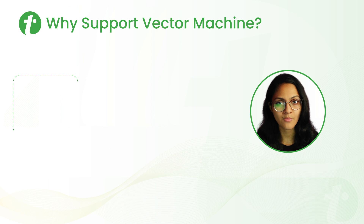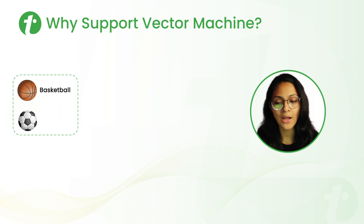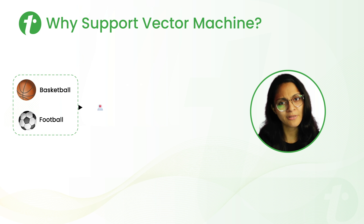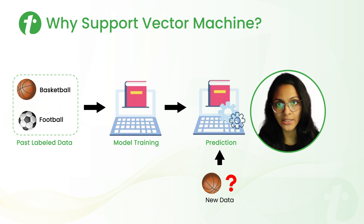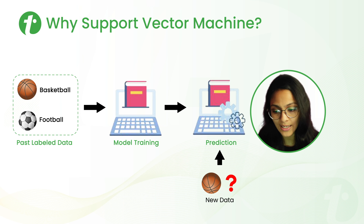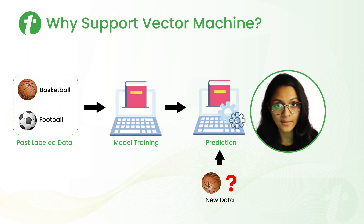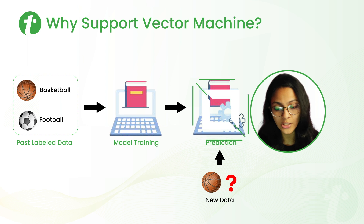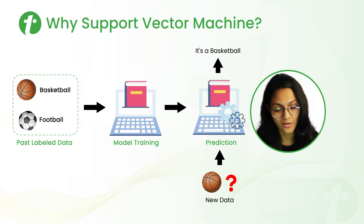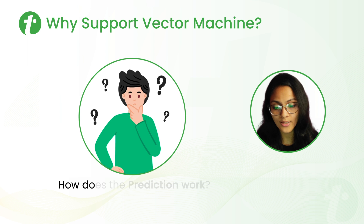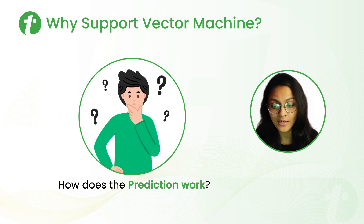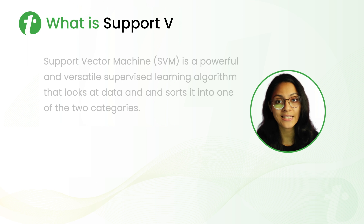Now let's see why support vector machine. Let's say we have to determine whether a given ball is a basketball or football. So let's build a model and train it on past labeled data. This data tells the model which kind of ball is basketball and which is football. After training, when we provide new data to the model, it will predict that it's a basketball. The question arises: how does the prediction work? In this case, we are using support vector machine, so we need to understand what it is.